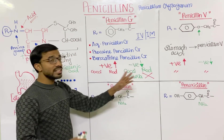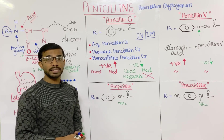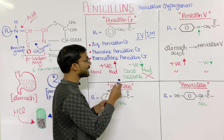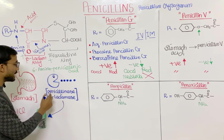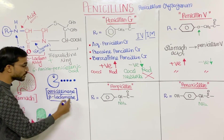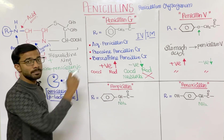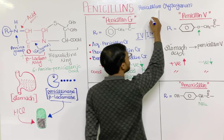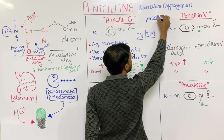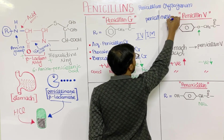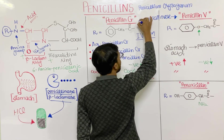Both these drugs can be destroyed by another susceptible component — penicillinase. Penicillinase, or beta-lactamase, destroys both penicillin G and penicillin V.